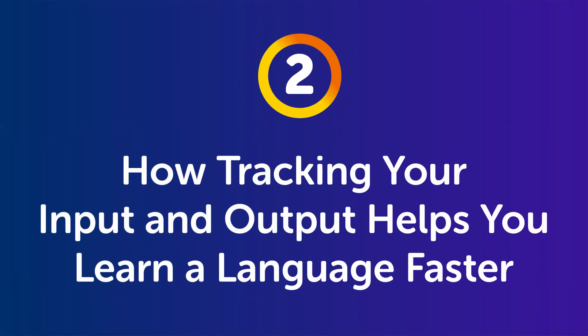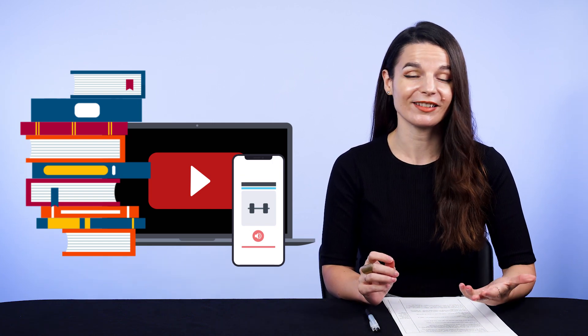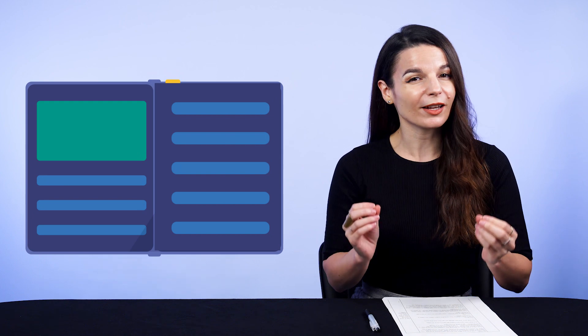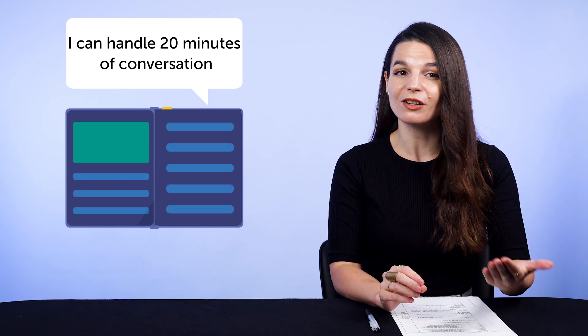Part 2: How tracking your input and output helps you learn a language faster. Most learners do a ton of studying — they read textbooks, watch videos on YouTube, spend hours on apps — but they have no measurable results or return on their time invested. If someone told you they've read 200 pages of a textbook, can they place a specific number on their results? Can they say, I learned 1000 words, or I can handle 20 minutes of conversation? Probably not. Most learners don't know because they don't measure their input or output. However, if you knew that listening to one hour of audio lessons a week resulted in being able to hold a three-minute conversation, now you know what results you're getting from your work.